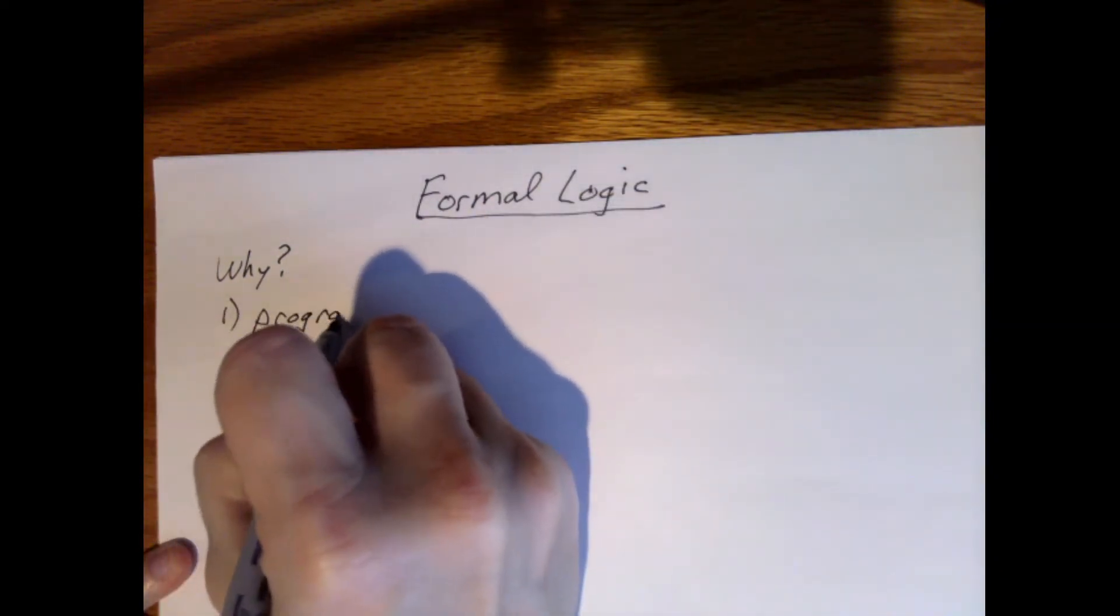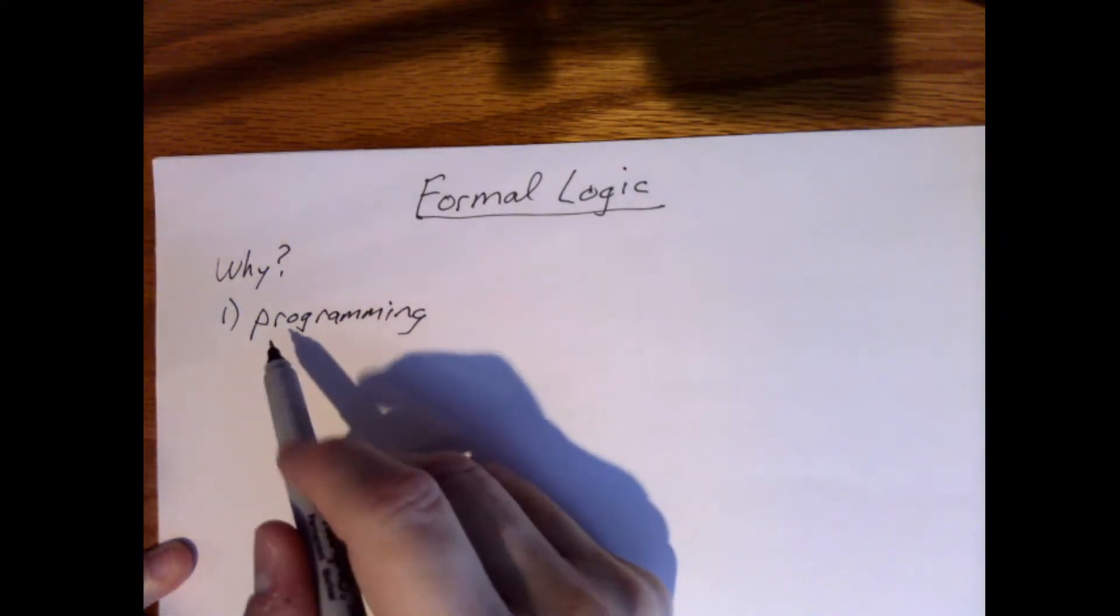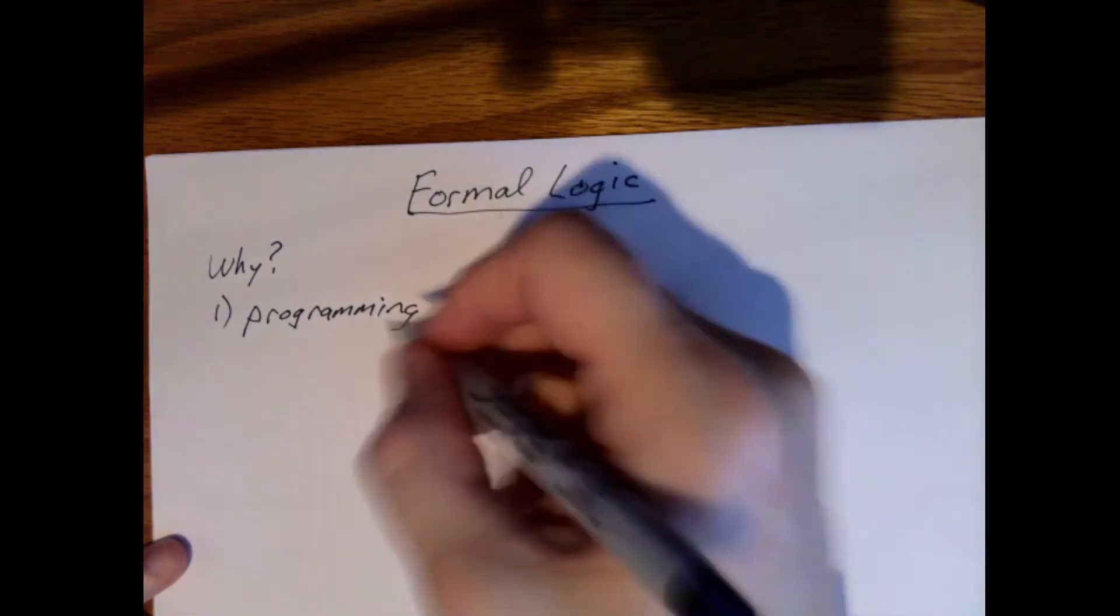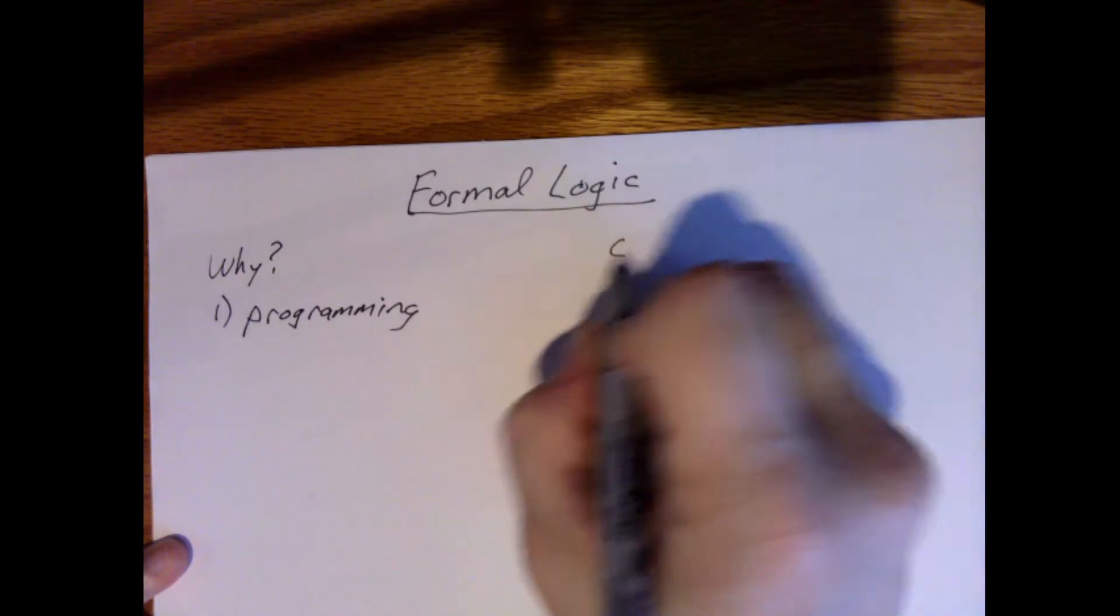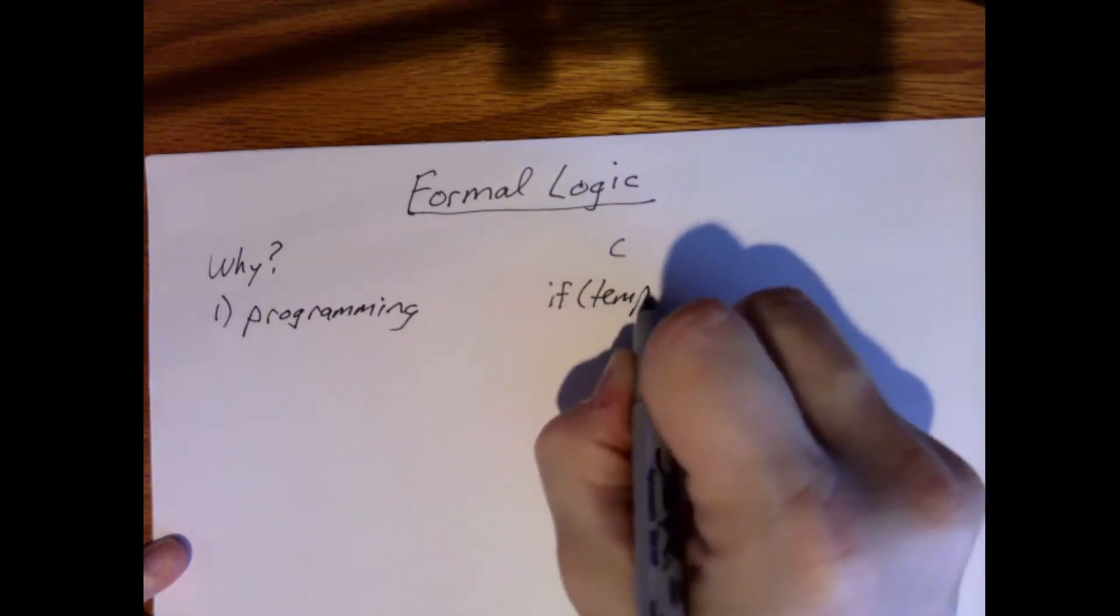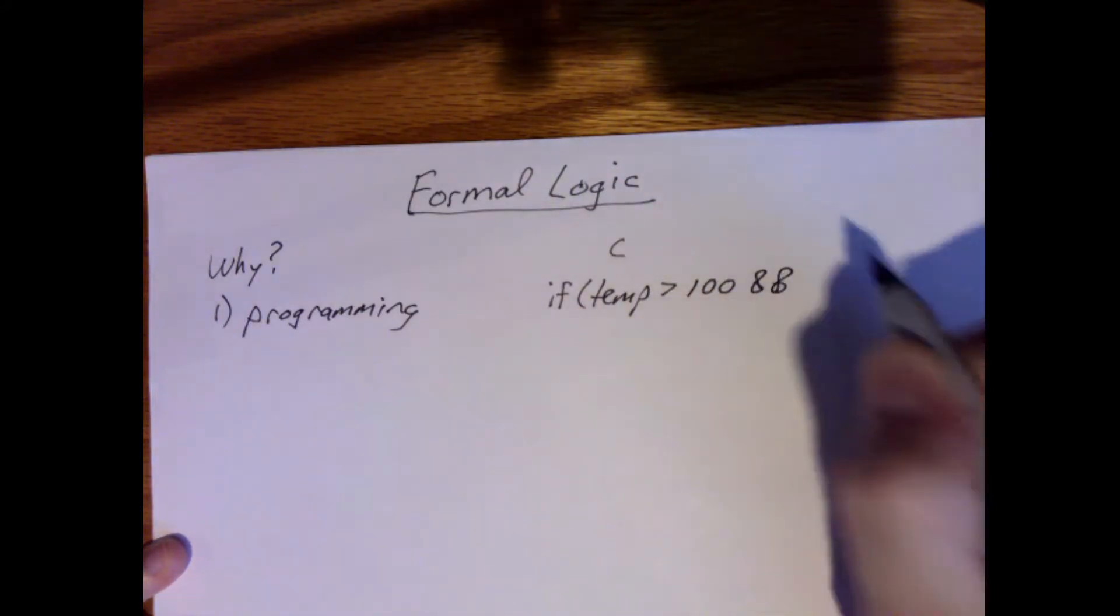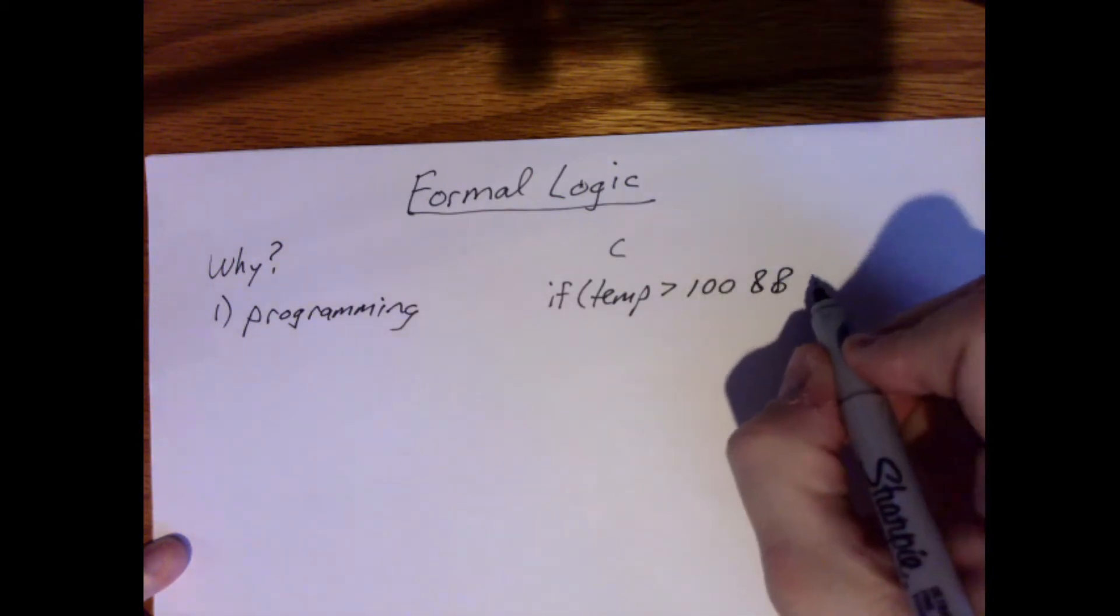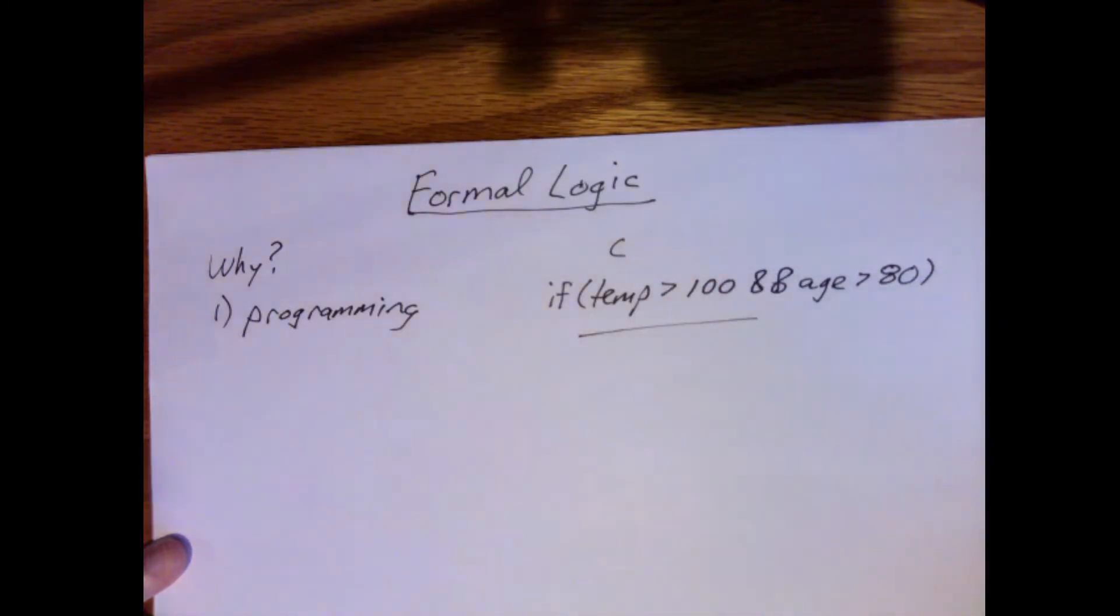Logic is important in things like programming because you get into things like this. If you know the C programming language, then you know how to write things like this: if temperature greater than 100 and (that's what the two ampersands mean) age greater than 80, then you would do something.